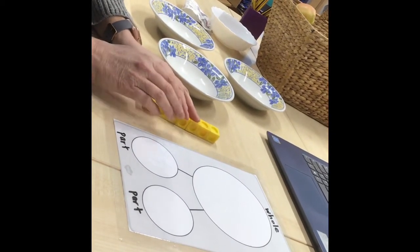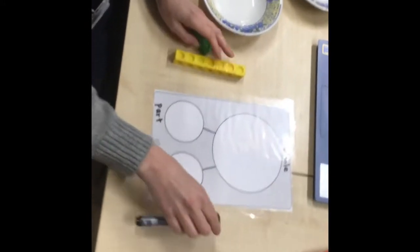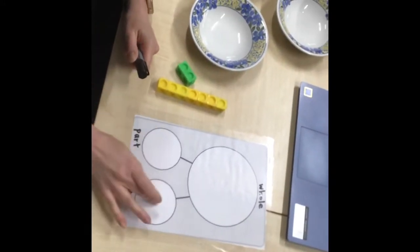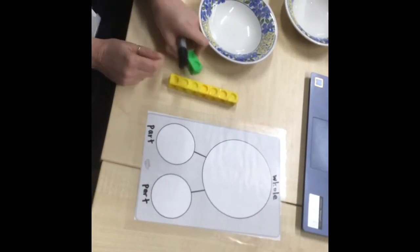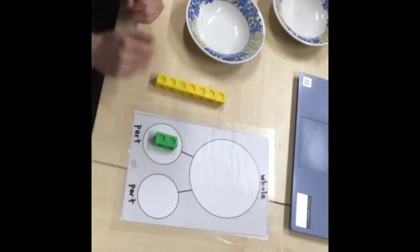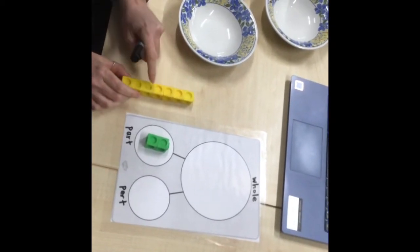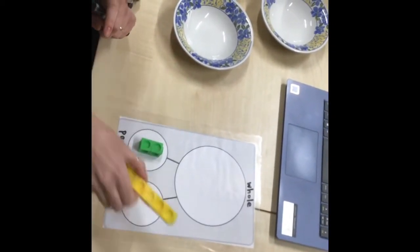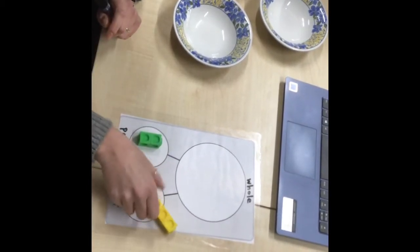Hello Kingfishers and Wagtails. This is another maths lesson for this week. We're thinking about part-part-whole numbers and how we add those together. So I've got two cubes there, and I've got one, two, three, four, five, six, seven there. If I put the two in one part and the seven in one part...